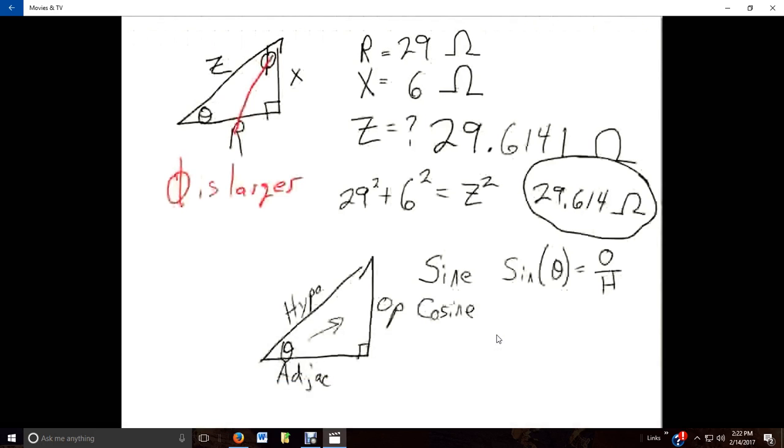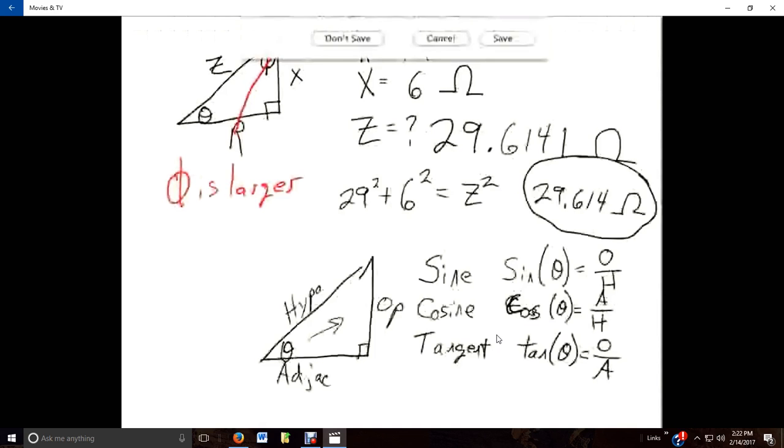Cosine, in other words, COS of theta is going to be the adjacent over the hypotenuse. And tangent, which is abbreviated tan of theta is going to be the opposite over the adjacent.